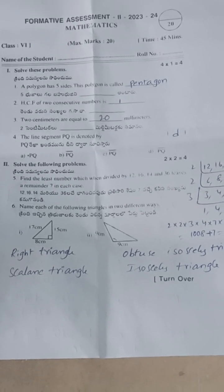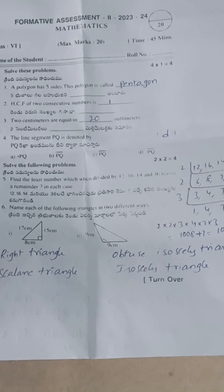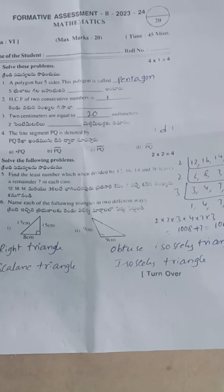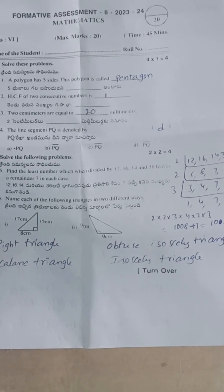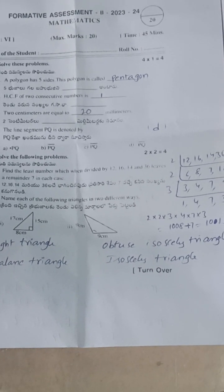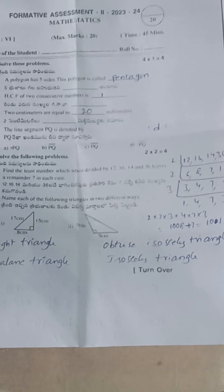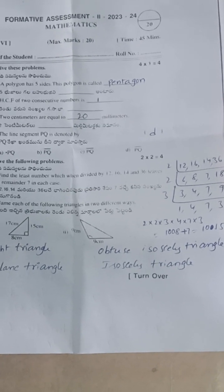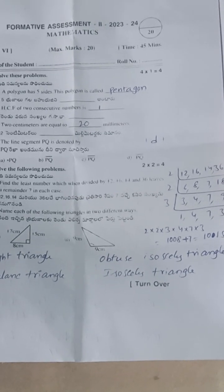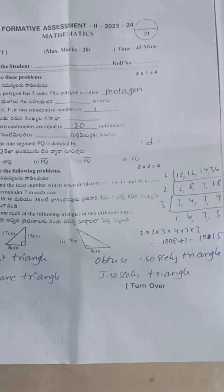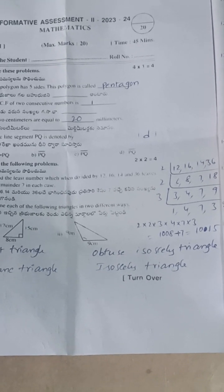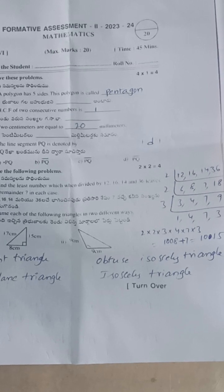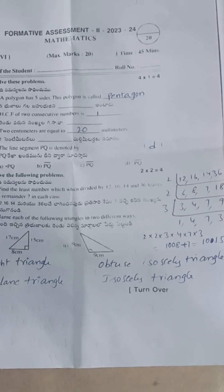Find the least number which when divided by 12, 16, 14, and 36 leaves remainder 7 in each case. First, find the LCM. The LCM is 1008. Since the remainder is 7 in each case, add 7: 1008 + 7 = 1015. So 1015 is the answer.